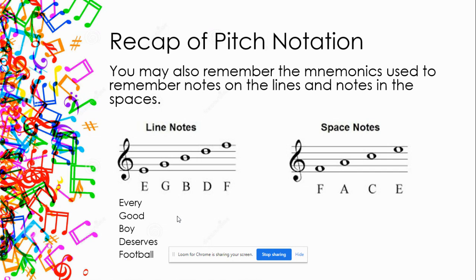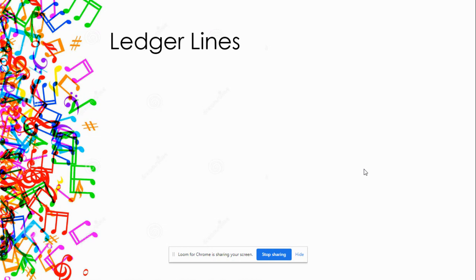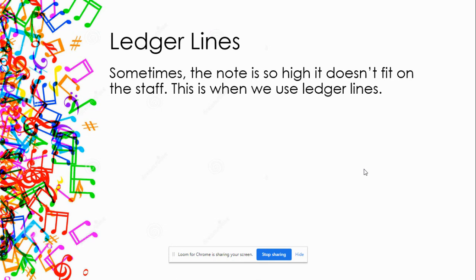A mnemonic is a phrase we use to remember something. In science you might have learned the order of the rainbow colors using 'Richard Of York Gave Battle In Vain' — Richard is Red, Of is Orange, York is Yellow, and so on. This works exactly the same way for notes. The notes in the spaces spell out the word FACE — easily remembered because 'face' and 'space' rhyme. Note that F is at the lower end — it spells FACE going upward, not downward.